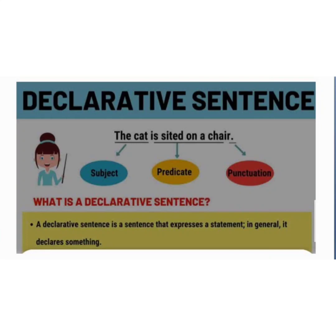The first one is the declarative sentence. A declarative sentence makes a statement that tells something. A full stop is used usually at the end of the sentence. A declarative sentence has a subject, a predicate, and a punctuation mark — that is, a full stop or period — at the end of the sentence.